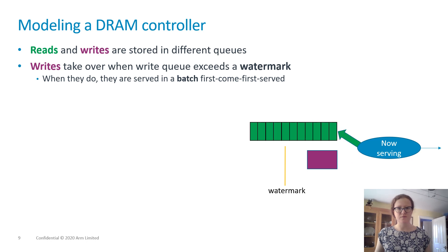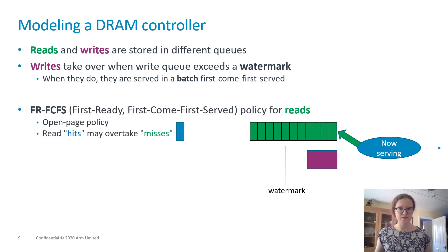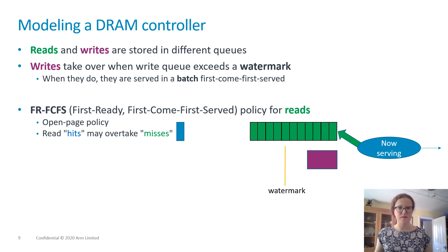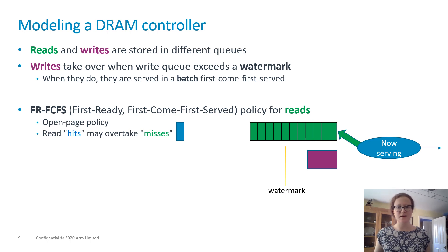The read queue is served according to a first-ready, first-come-first-served policy. When the controller serves a request, it first moves all the data stored in a row into a buffer, which is time-consuming. Any further requests that use the data in the buffer can then be served much faster — this is called a row hit. Row misses need to open the row before accessing any DRAM cells, so they take longer. Row hits are given priority under this policy, hence the 'first-ready' part; row miss requests are simply scheduled first-come, first-served.